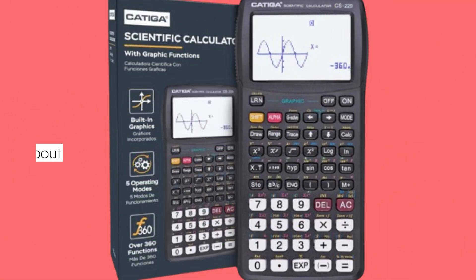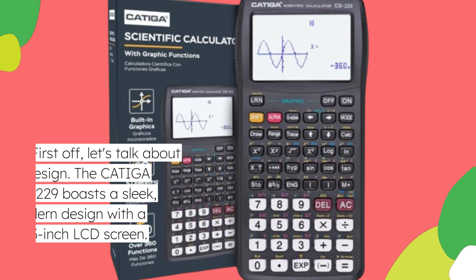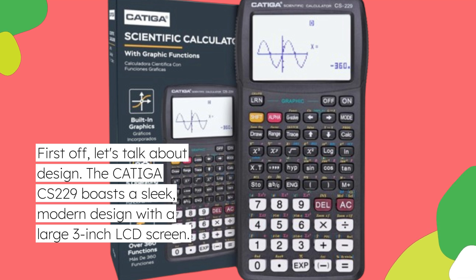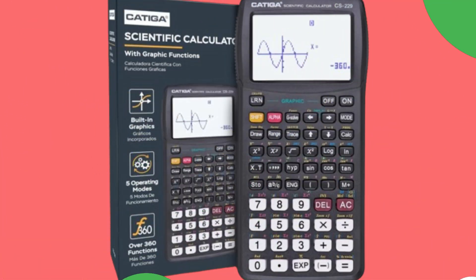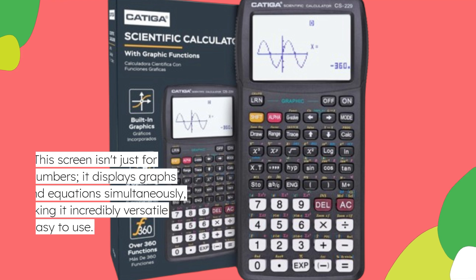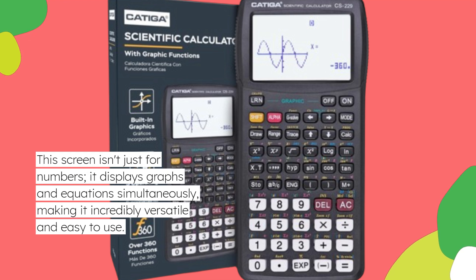First off, let's talk about design. The CATIGACS 229 boasts a sleek, modern design with a large 3-inch LCD screen. This screen isn't just for numbers, it displays graphs and equations simultaneously, making it incredibly versatile and easy to use.